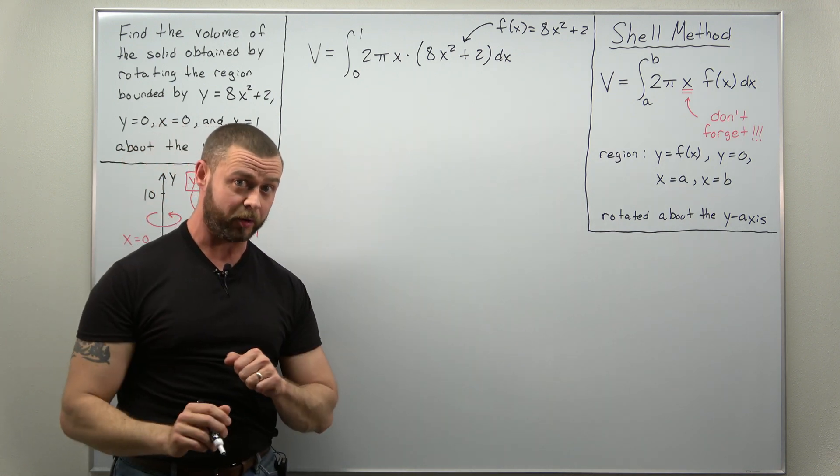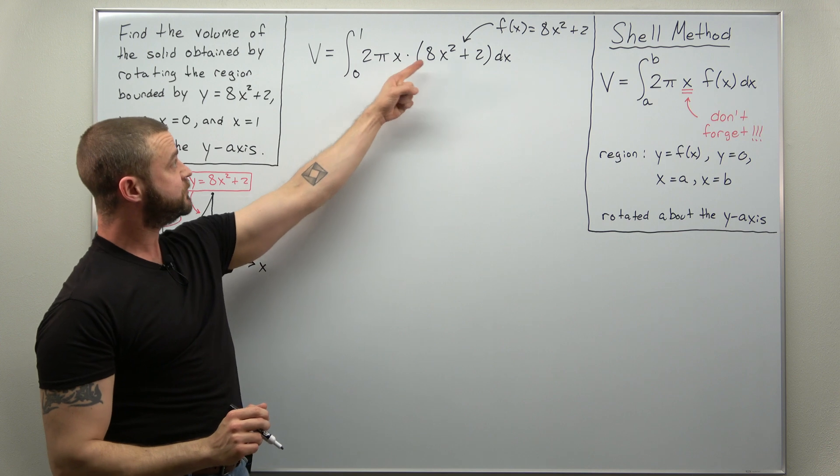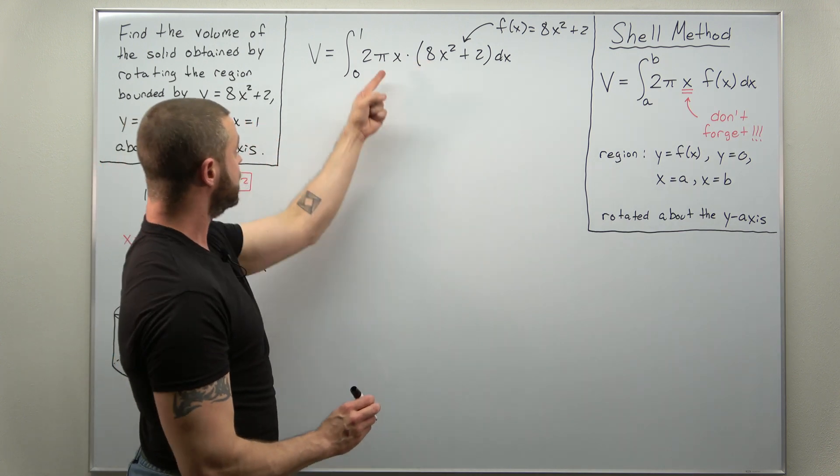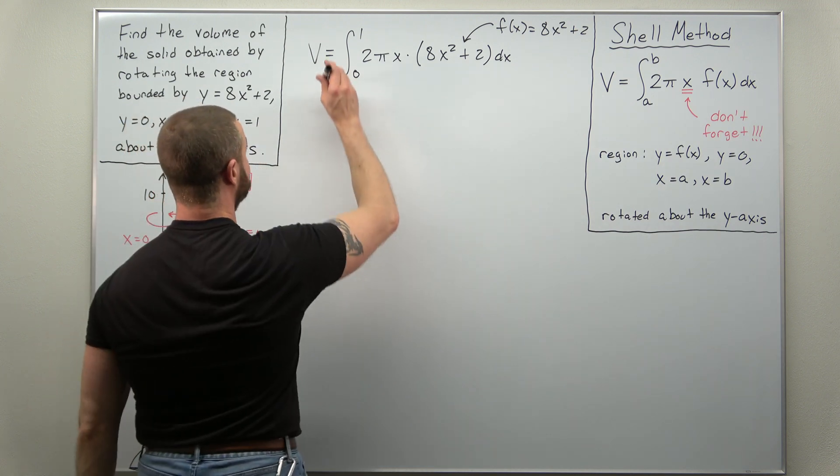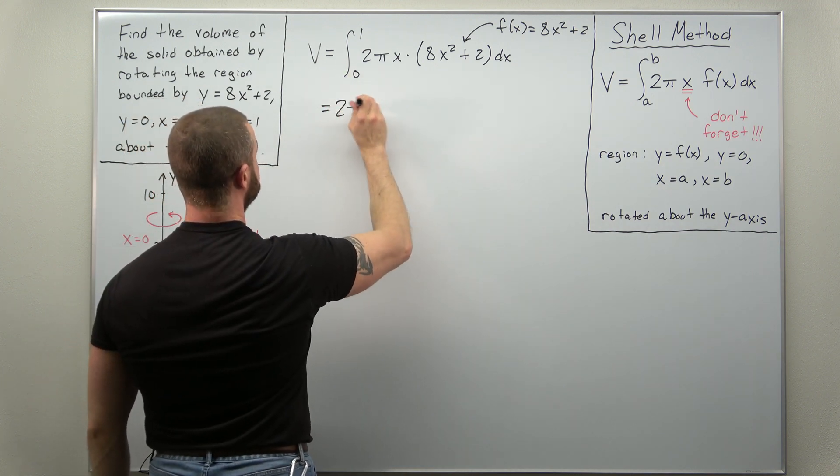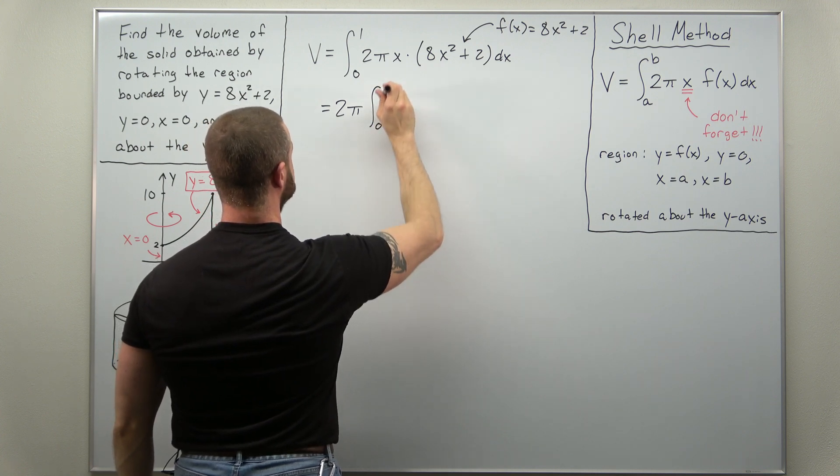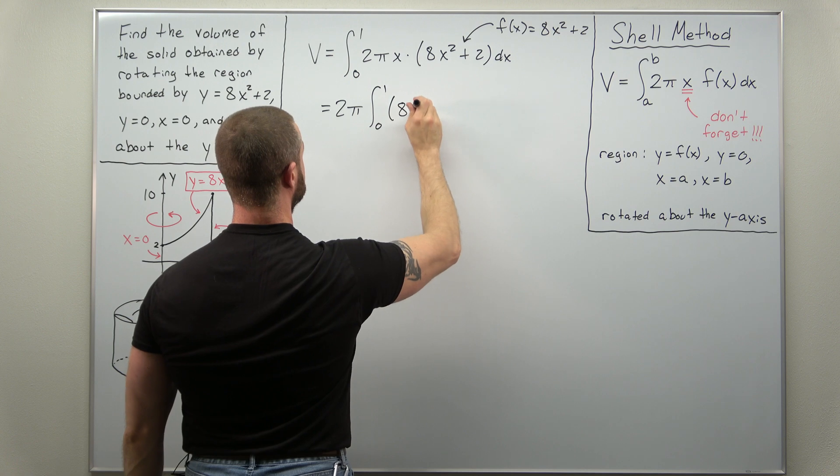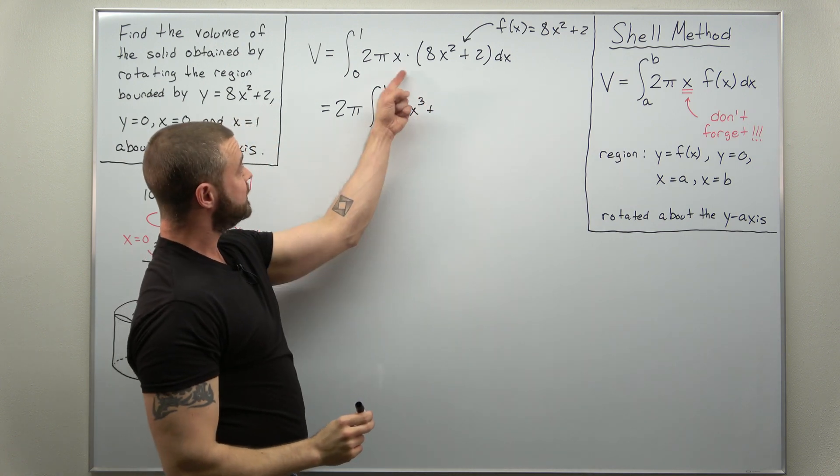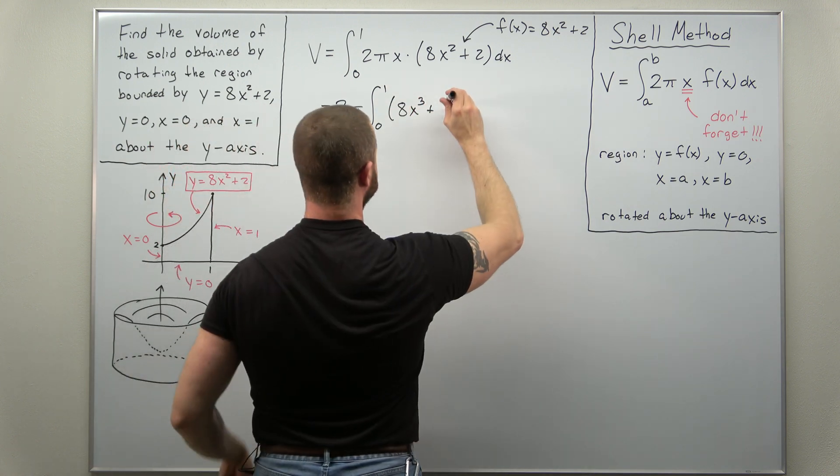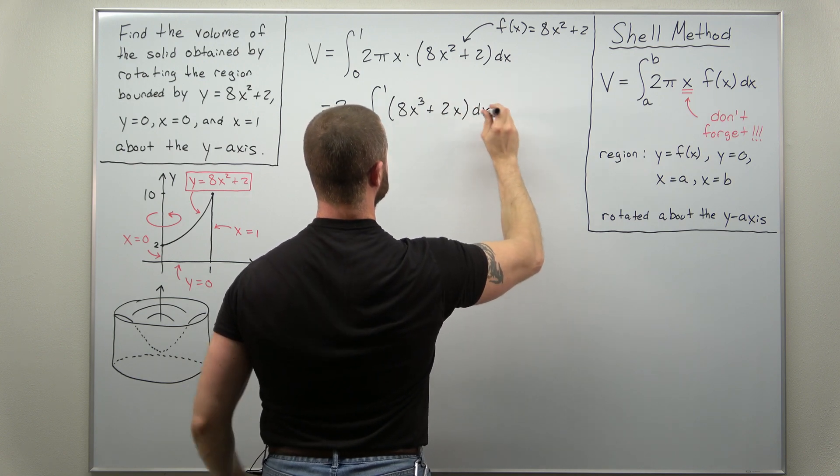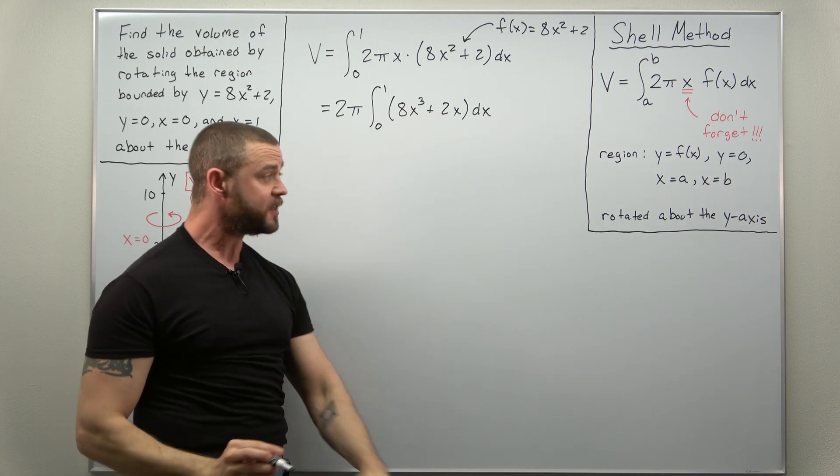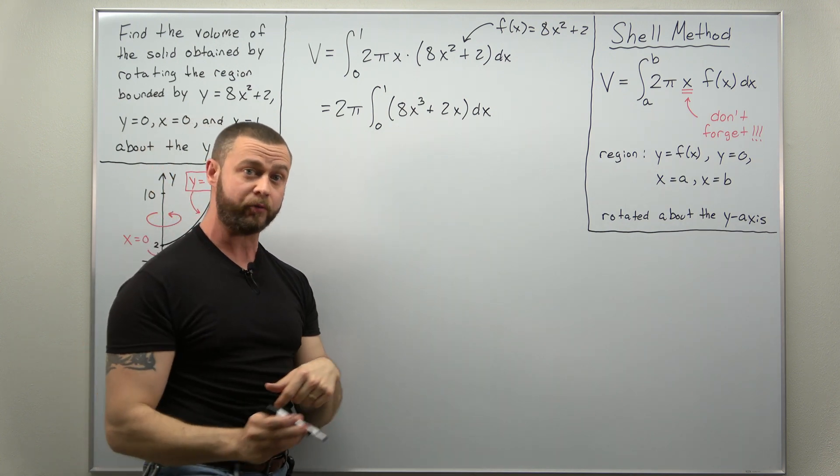Alright now this integral is really simple. All we need to do is basically distribute that factor of x and we get some very simple antiderivatives to calculate. Let me bring the factor of 2 pi out front as well. I'm going to write that now as an integral from 0 to 1. Distribute your x in, you're going to get 8x cubed. And distribute the x in to the 2 and you'll get 2x.